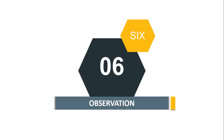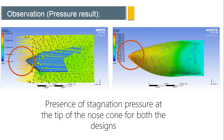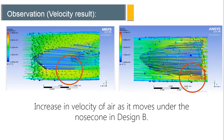In the observation part, we highlighted key results. The air pressure result shows a high-pressure area generated at the tip of both nose cones — this is stagnation pressure. In the air velocity result, Design A shows no increase in velocity as air moves under the nose cone, whereas Design B clearly shows an increase in velocity under the nose cone, satisfying Bernoulli's equation. This creates a venturi effect, causing air to move faster in the low-pressure area, making the vehicle faster and more stable at corners.